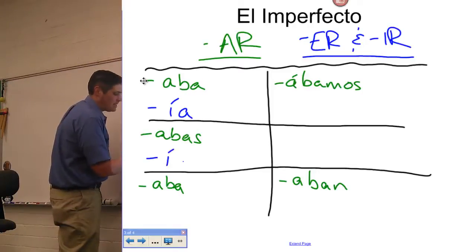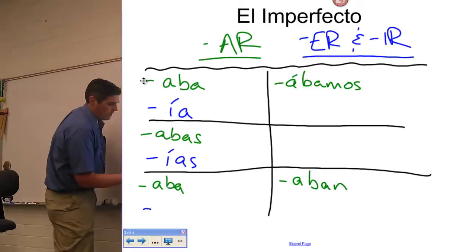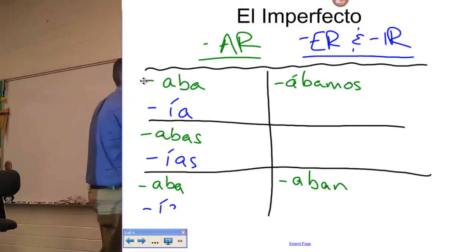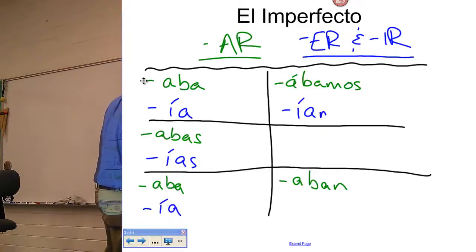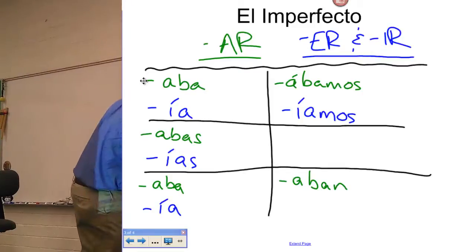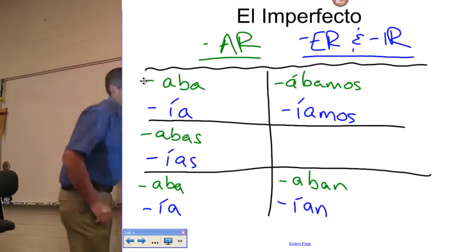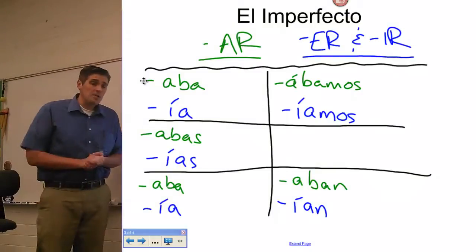Comías, comía, comíamos, comían. So those were our endings for the imperfect. Things that used to be going on.